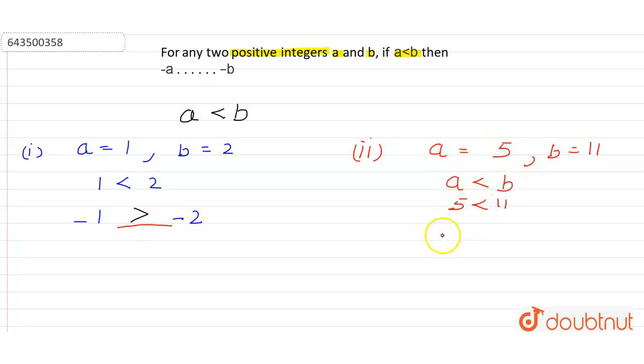But what about the minus 5, is that lesser than minus 11 or greater than? Definitely it's greater than. That means here negative a is always greater than negative b. Thank you.